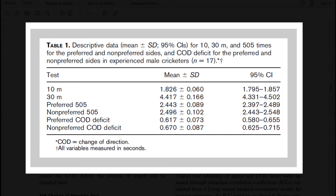To explain it more simply using the numbers: an average athlete in this cohort ran a 505 on their preferred turn side in about 2.4 seconds — covering 10 meters total but with a 180-degree turn in the middle. Of course it takes longer because you have to decelerate and re-accelerate. Those same athletes, running a maximal 30-meter sprint, reached the 10-meter mark in about 1.8 seconds. So subtracting the 10-meter split from the 505 time gives approximately 0.6 seconds — the extra time it takes the average athlete to turn. Interestingly, this aligns with Martin Boucher's 30-15 calculations, where every additional turn adds roughly 0.7 seconds.